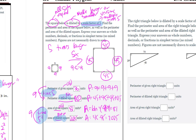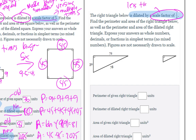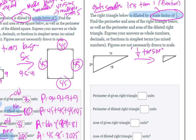Now the last problem: a right triangle is dilated by a scale factor of one-fourth. Since it's a fraction less than one, the shape gets smaller — it becomes one-fourth the size. The given triangle has sides 30, 72, and 78. The original perimeter is 30 plus 72 plus 78, which equals 180.